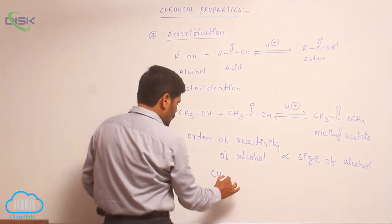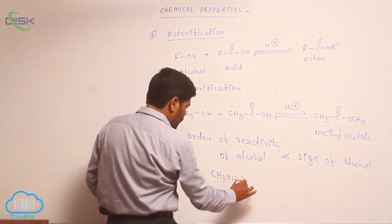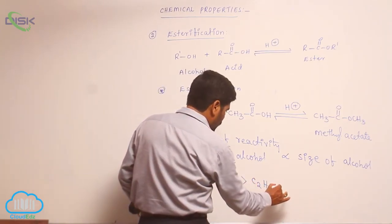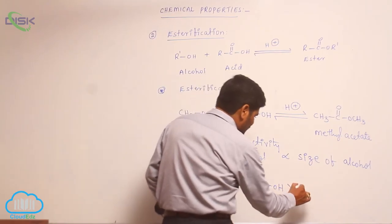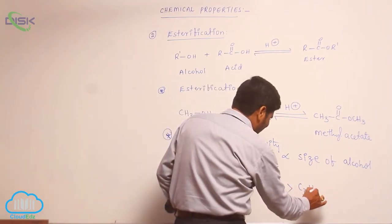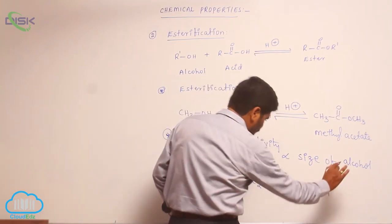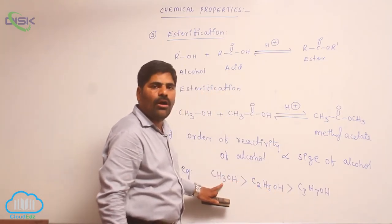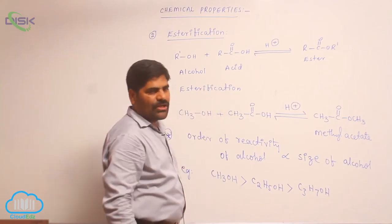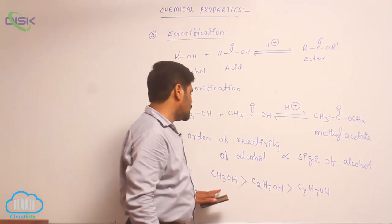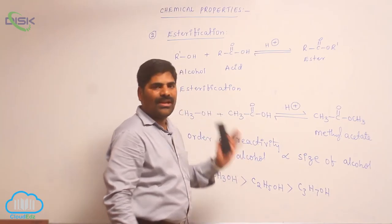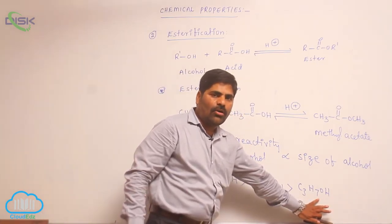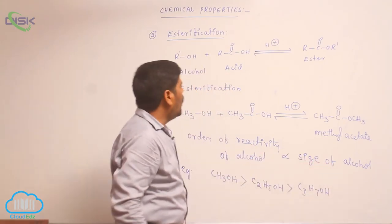For example, methyl alcohol easily forms an ester compared to ethyl alcohol, and ethyl alcohol more easily than propyl alcohol (C₃H₇OH). So the order of reactivity is: methyl alcohol reacts more easily with an acid to form an ester compared to ethyl alcohol and propyl alcohol.